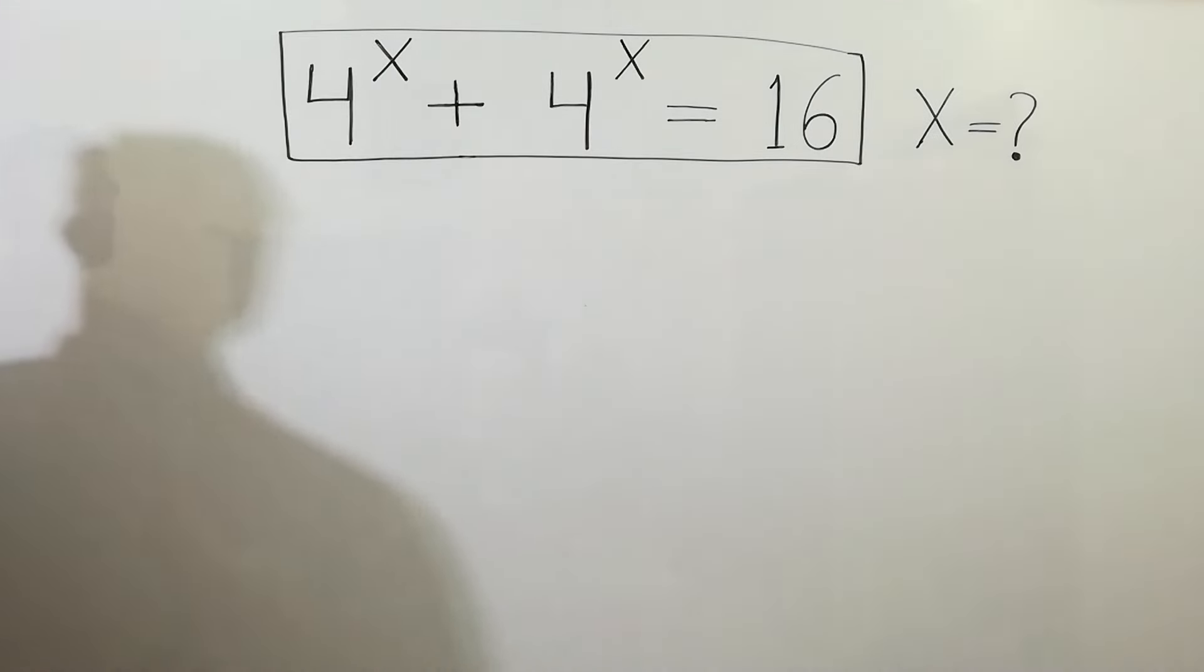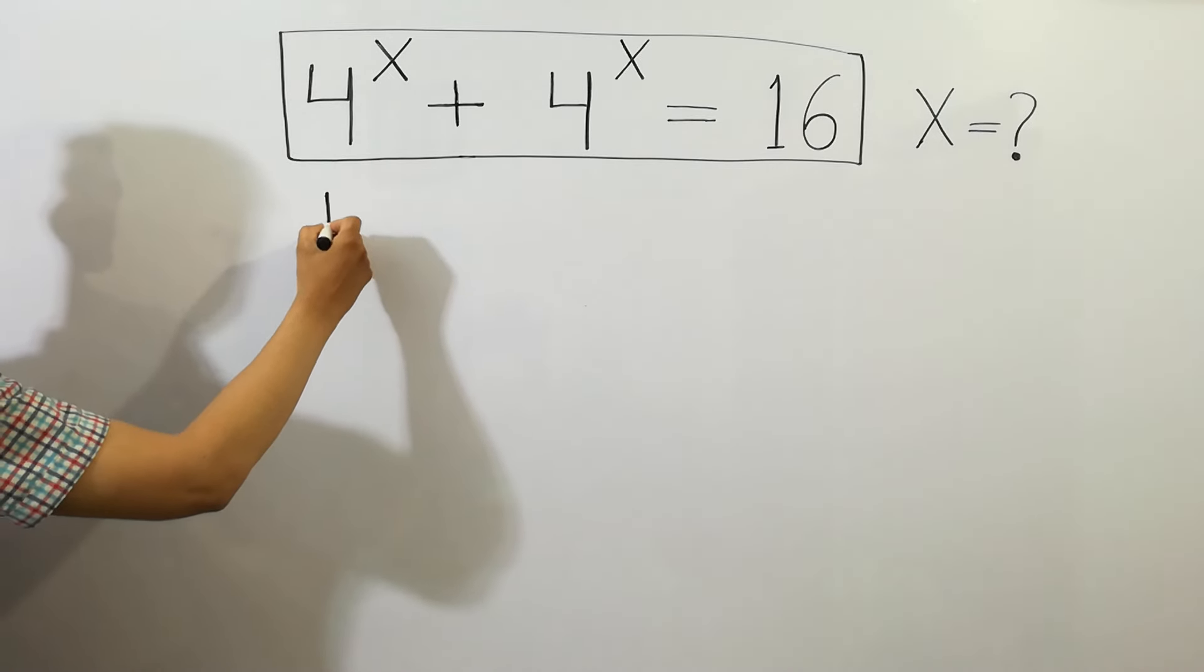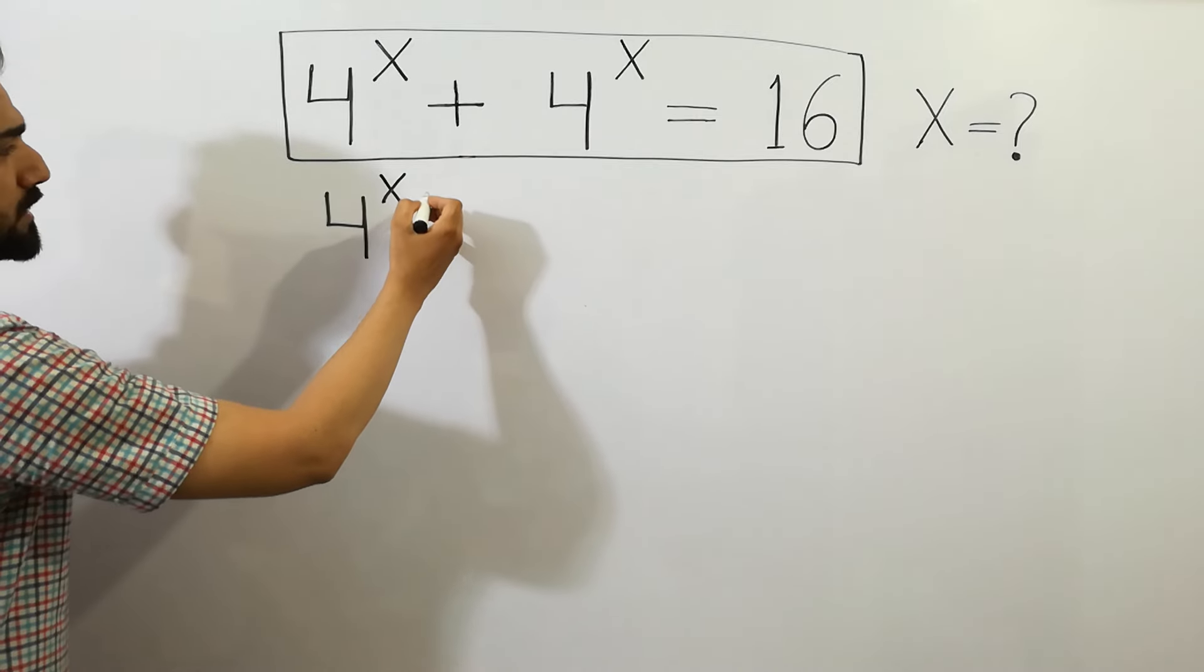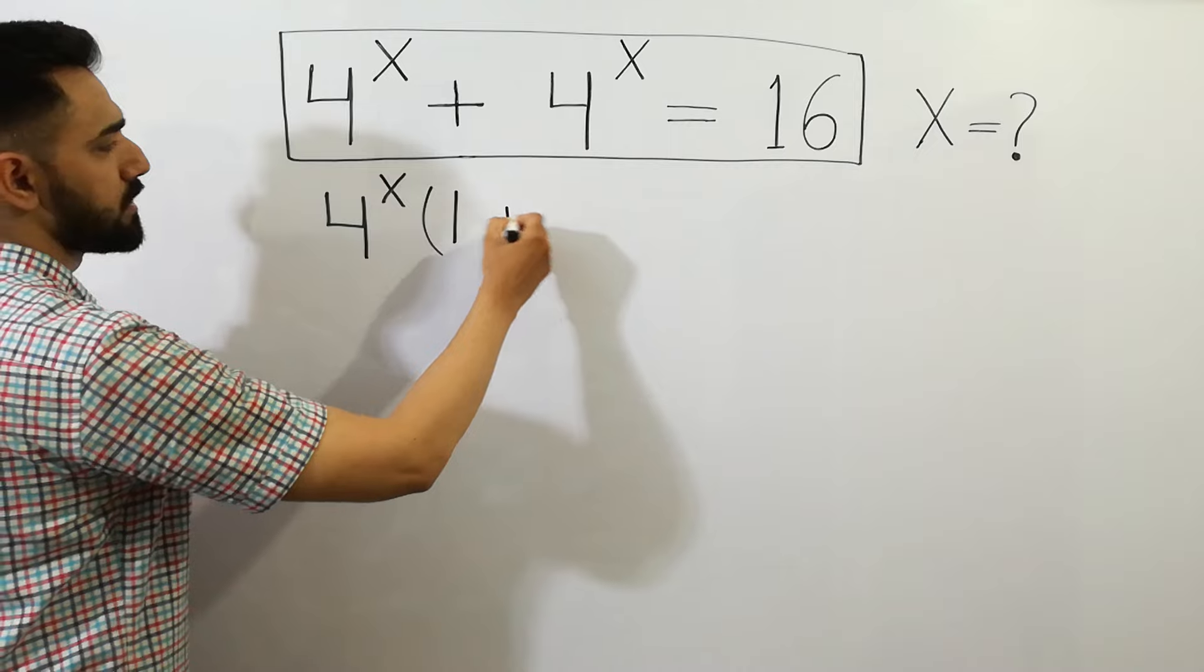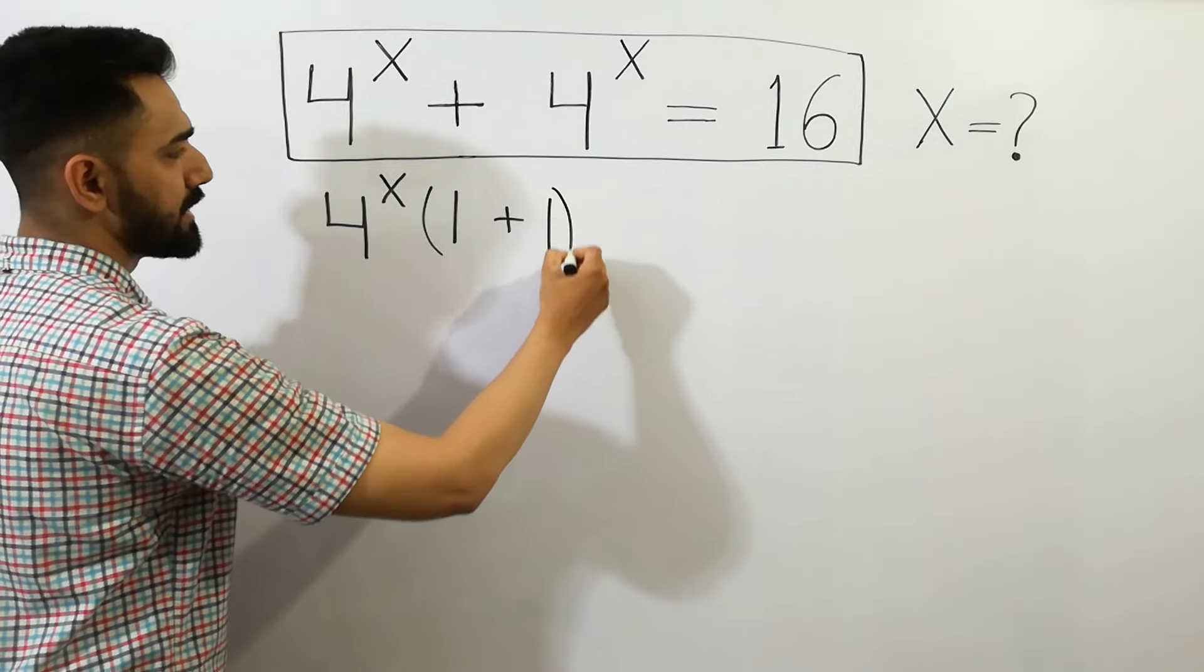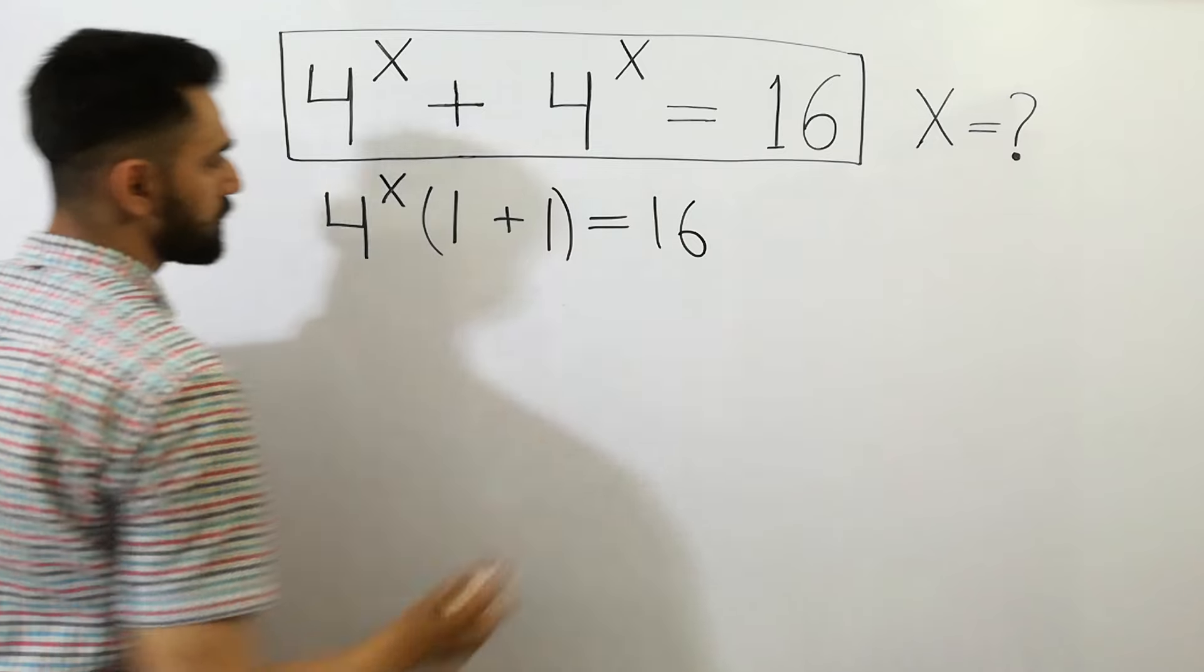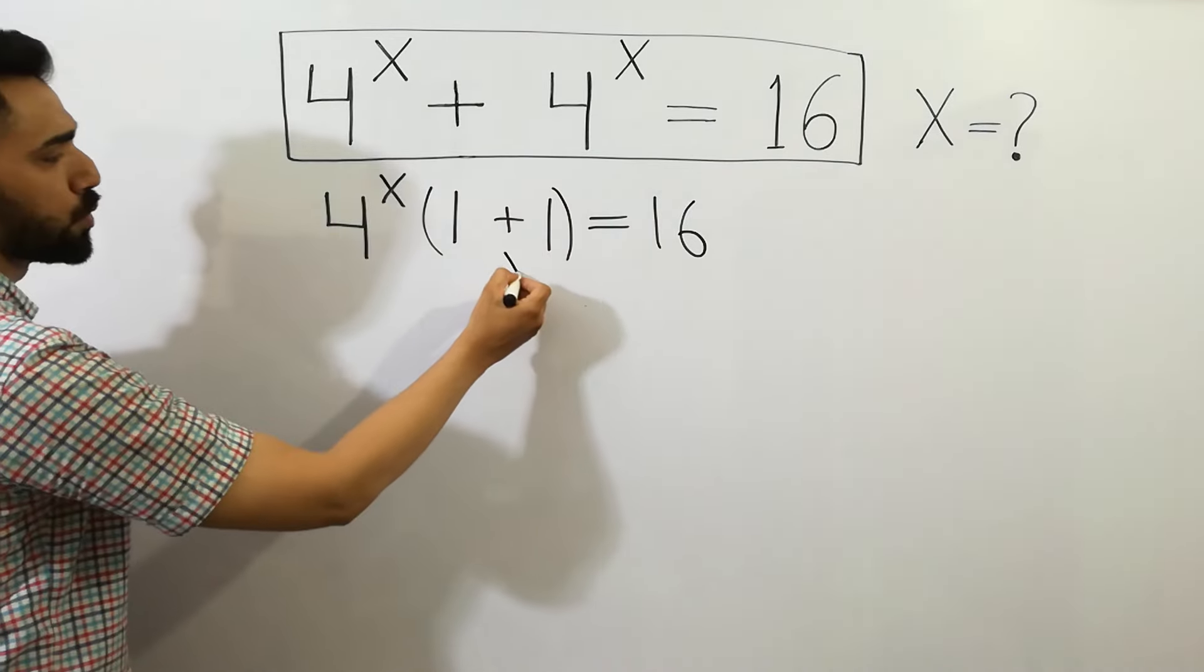Let's solve that. First, we can take 4 to the power x as a common factor. We get 1 plus 1 equals 16, and 1 plus 1 is 2.